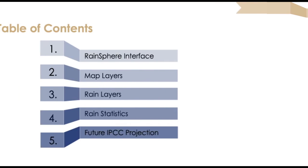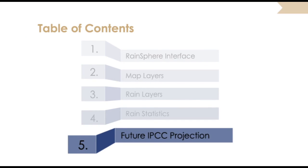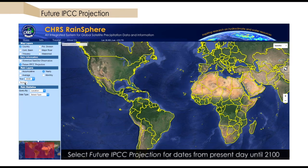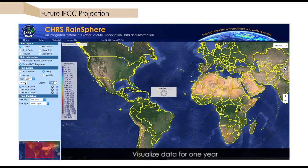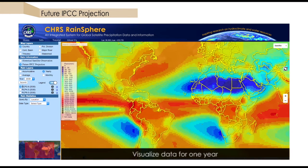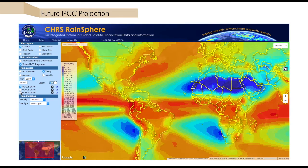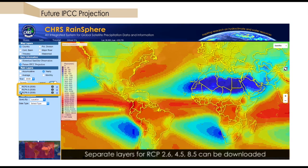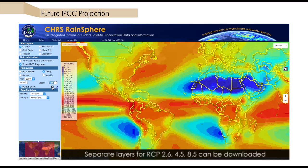Switching now to future mode, we look at IPCC model projections. Select the future IPCC projection button to examine future precipitation projections up until the year 2100. Visualization features are largely the same as historical observations, except now we notice that visualizing one year brings up three data options. These correspond to three different carbon emission scenarios, all of which can be downloaded individually.